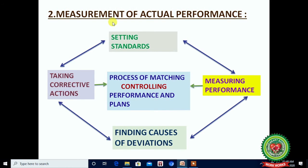Step 2 — Measurement of Actual Performance. The procedure is: firstly set the standard, then measure performance, then find the cause of deviation, and the next step is taking corrective action. This is the full procedure for controlling — how you compare the actual performance with the standard set.